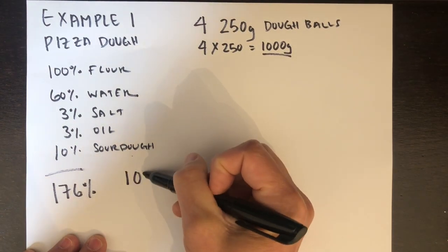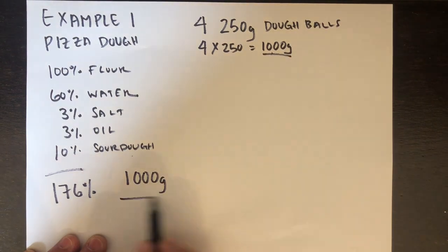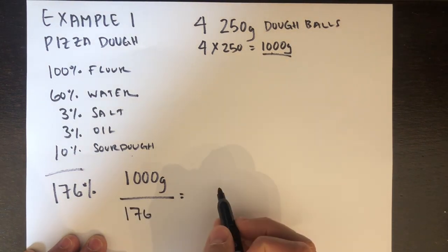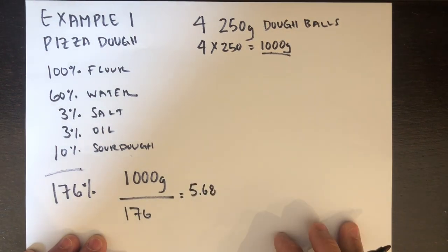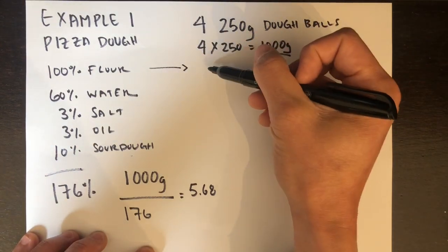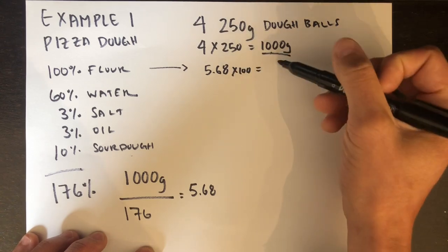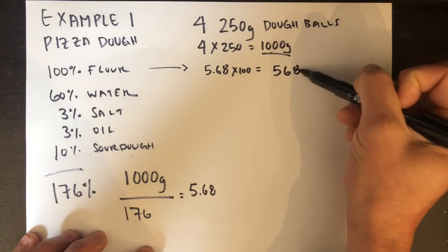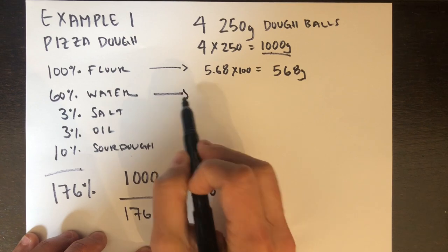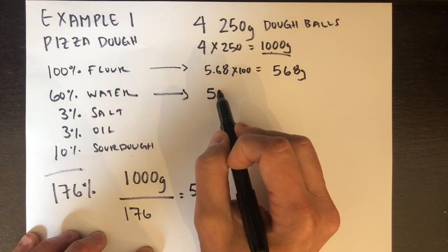So first add all that up and you get 176. I'm going to take my 1000 grams and divide it by 176. I could also divide it by 1.76, it's all the same. I'm going to take that number 5.68 and multiply it by a hundred and that's going to give me 568 grams. That's how many grams of flour I need for my recipe.